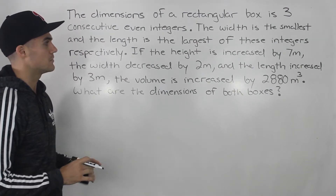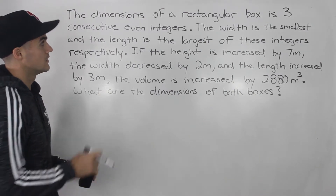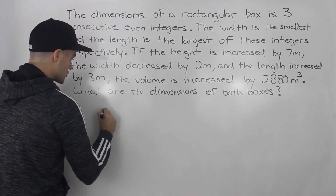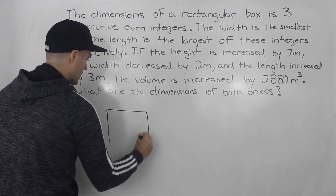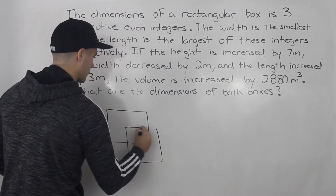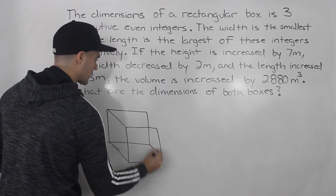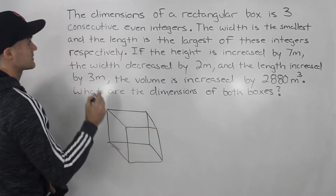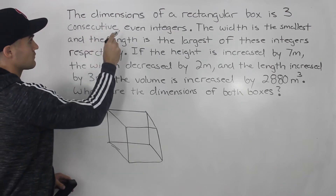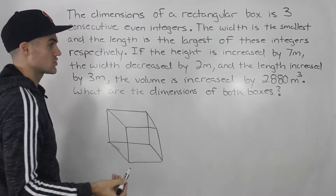There are a lot of steps to take but I'm going to do my best to explain it. So we have a rectangular box — let's draw that. We're told that the dimensions of the rectangular box are three consecutive even integers.